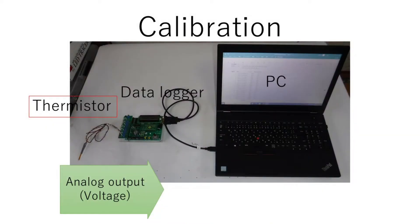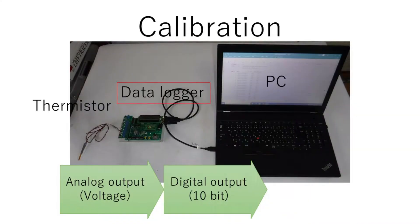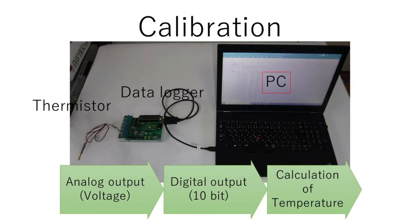The thermistor outputs voltage as analog data. The data logger converts it into a 10-bit digital signal and outputs it. Temperatures are then calculated from the digital output using a PC.